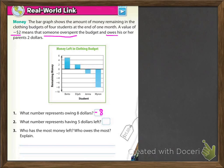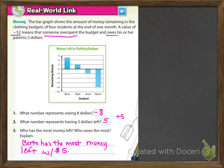Then it says, what number represents having $5 left? You can express it with positive 5, but more than likely you're just going to express it with a 5, because that's how you've learned it thus far. Then it says, who has the most money left and who owes the most? You can see that Berto has the most money left because he has $5, and Myron owes the most because Myron owes $8 — or overspent by $8.